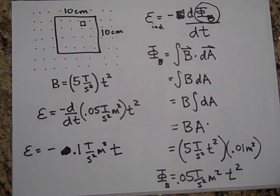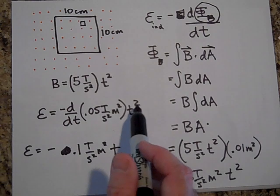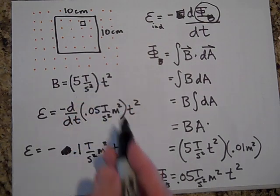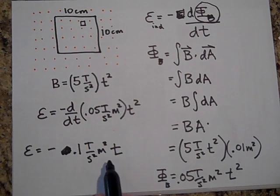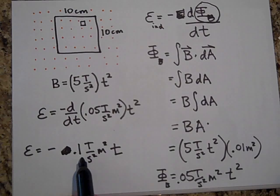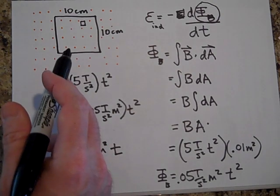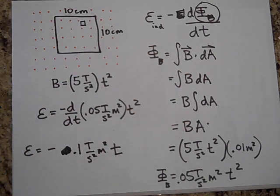So apparently, this voltage is changing with time. So at T equals zero, there is no voltage. But at T equals one second, I'll get negative 0.1 volts. At two seconds, I'll get negative 0.2 volts. So apparently, the voltage, not only is there a voltage induced, but it's changing with time.